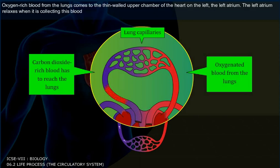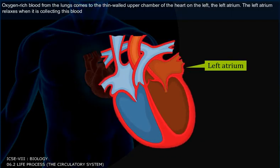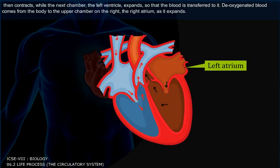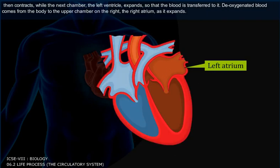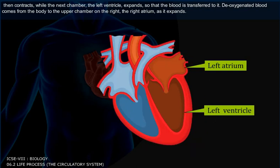Oxygen-rich blood from the lungs comes to the thin-walled upper chamber of the heart on the left, i.e. the left atrium. The left atrium relaxes when it is collecting this blood, and then contracts while the next chamber, the left ventricle, expands so that the blood is transferred to it.